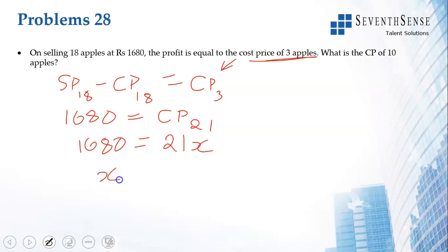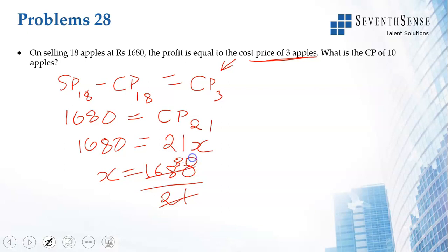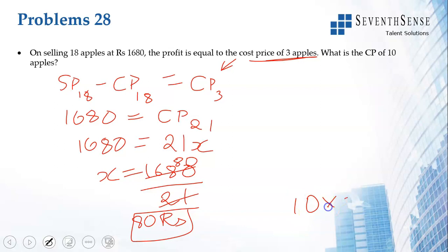Solving 21x = 1680, we get x = 1680 / 21 = 80 rupees. So the cost price of 1 apple is 80 rupees. Therefore, the cost price of 10 apples = 10 × 80 = 800 rupees.